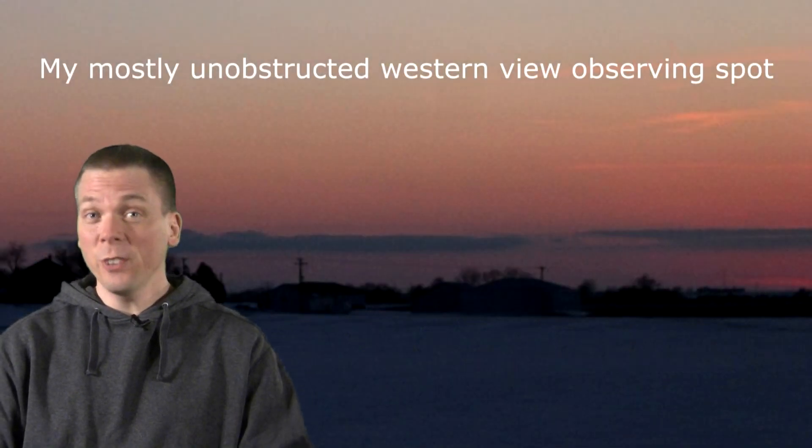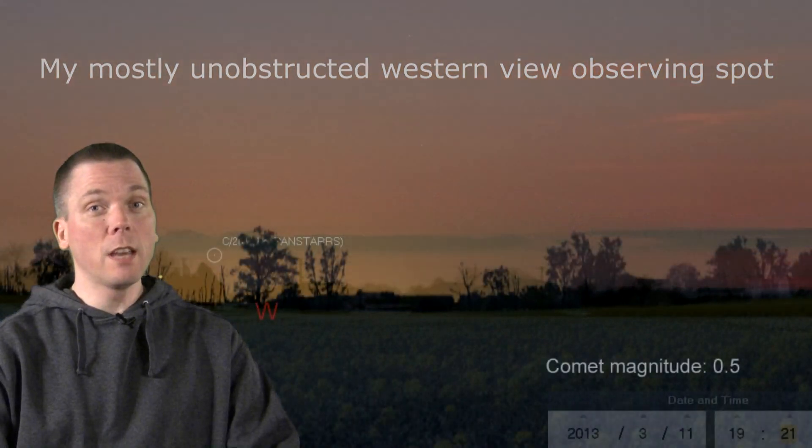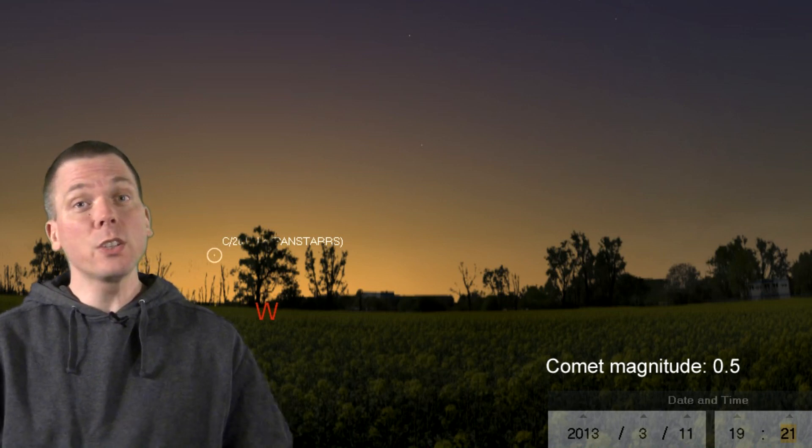Find a low, flat, western horizon if possible, but rather than give you a single graphic showing where the comet is on various days, let's show you where the comet is relative to the sun every day so you can measure where to find it off the horizon.